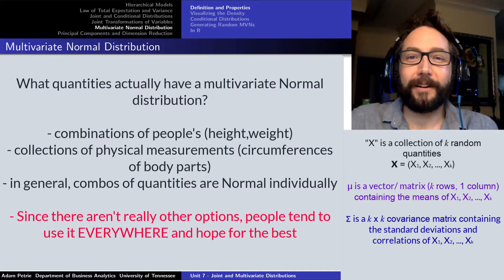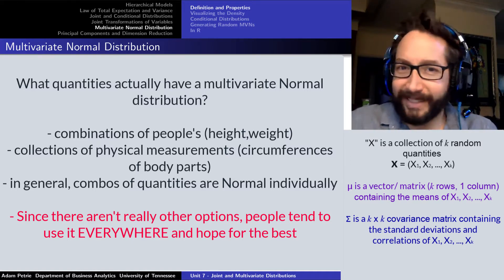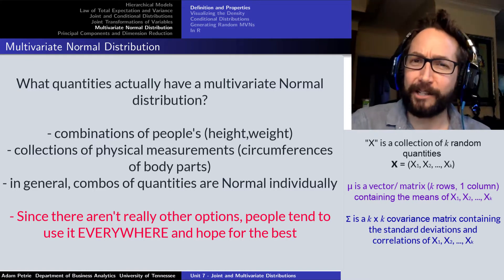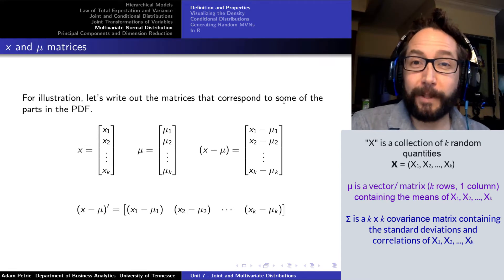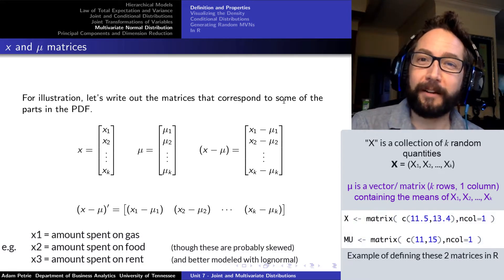It's one of those few things that we can actually work with because we have the formula. Anything else, like a multivariate log normal distribution, we don't really have the mathematics for that written down all that adequately.